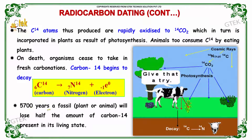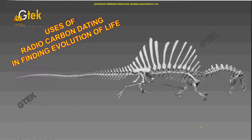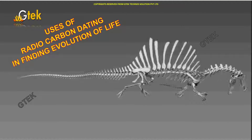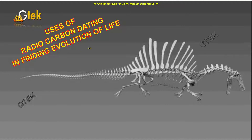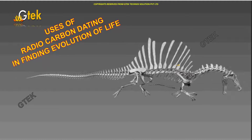In 5,700 years, a fossil will lose half the amount of carbon-14 present in its living stage. The radiocarbon dating is used in finding the evolution of life.